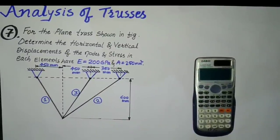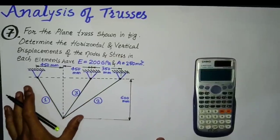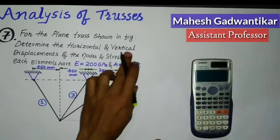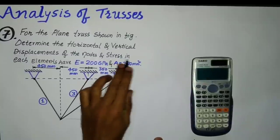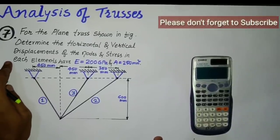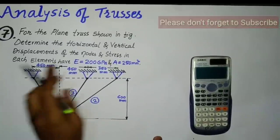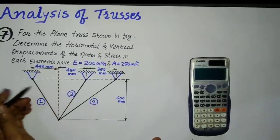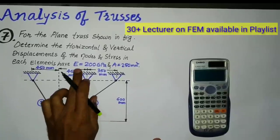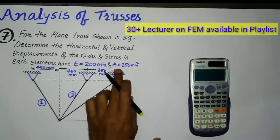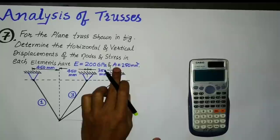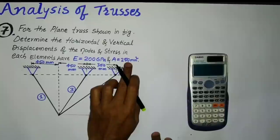Welcome back for another problem on the truss element. The question for the plane truss shown in the figure asks us to determine the horizontal and vertical displacements of the nodes and stresses in each element. We have three elements. The Young's modulus E is 200 GPa and the area A is 250 mm² for all three elements.